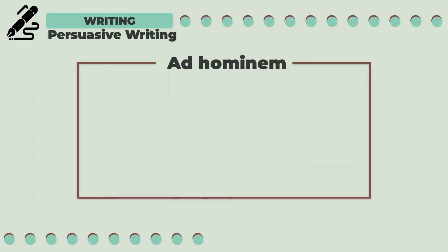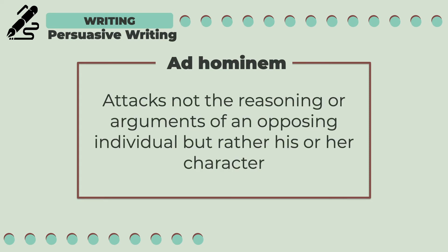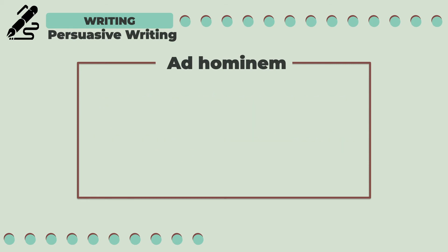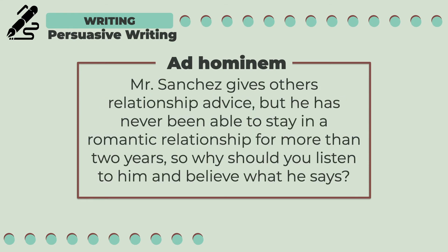The third type of logical fallacy is ad hominem. This is when the attack is not on the reasoning or arguments, but rather on the character of the opposing individual. For example: "Mr. Sanchez gives others relationship advice, but he has never been able to stay in a romantic relationship for more than two years. So why should you listen to him and believe what he says?" Instead of focusing on the advice that needs to be opposed, the speaker focuses on the character of Mr. Sanchez, which is not being able to stay in a romantic relationship for more than two years.